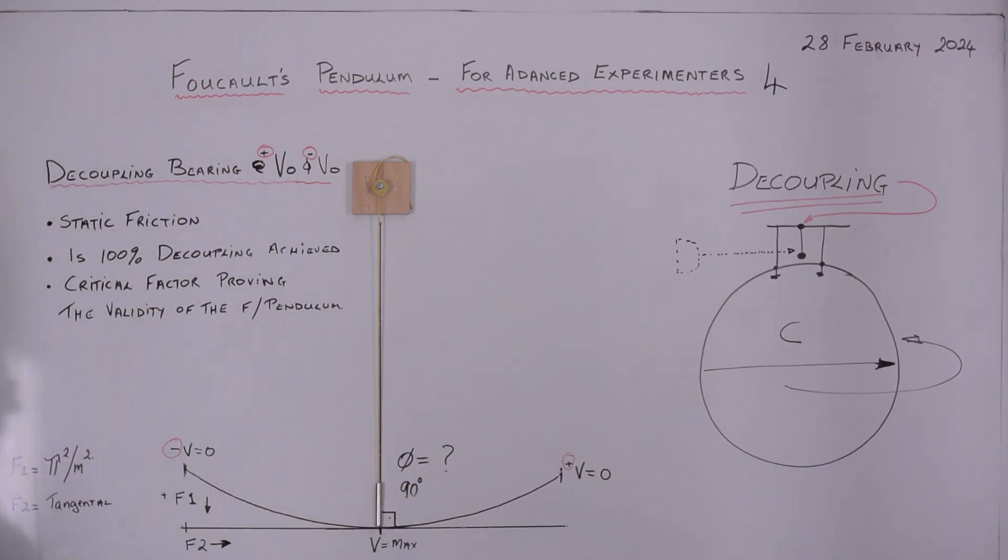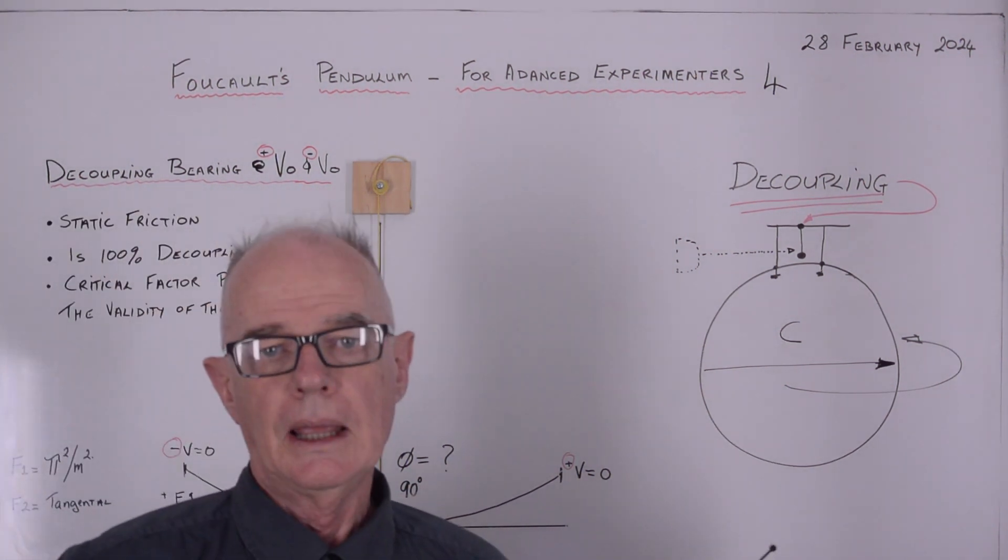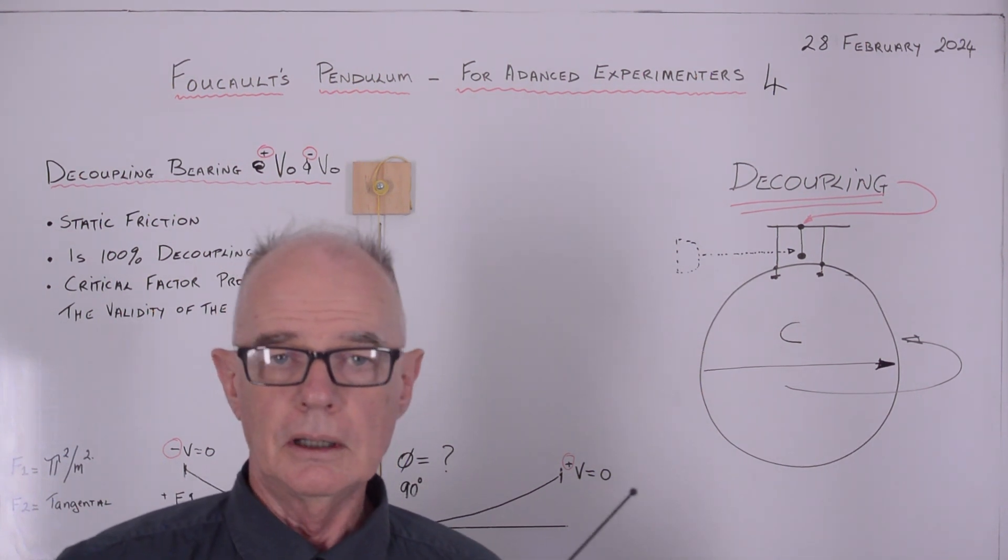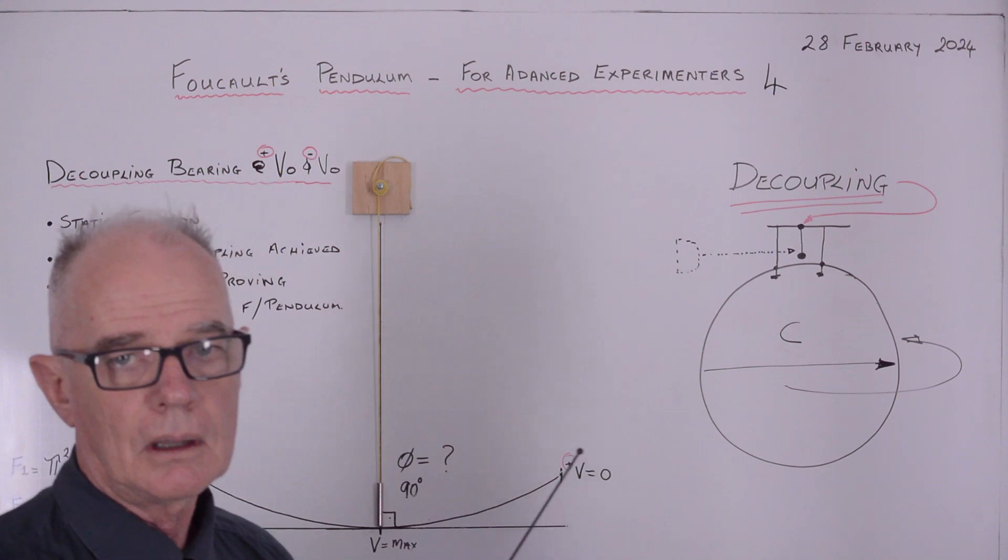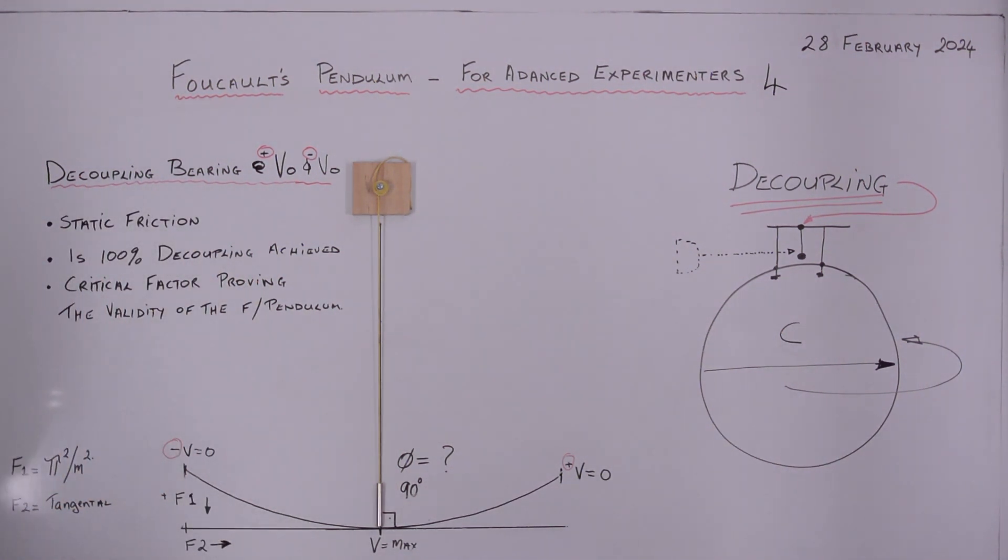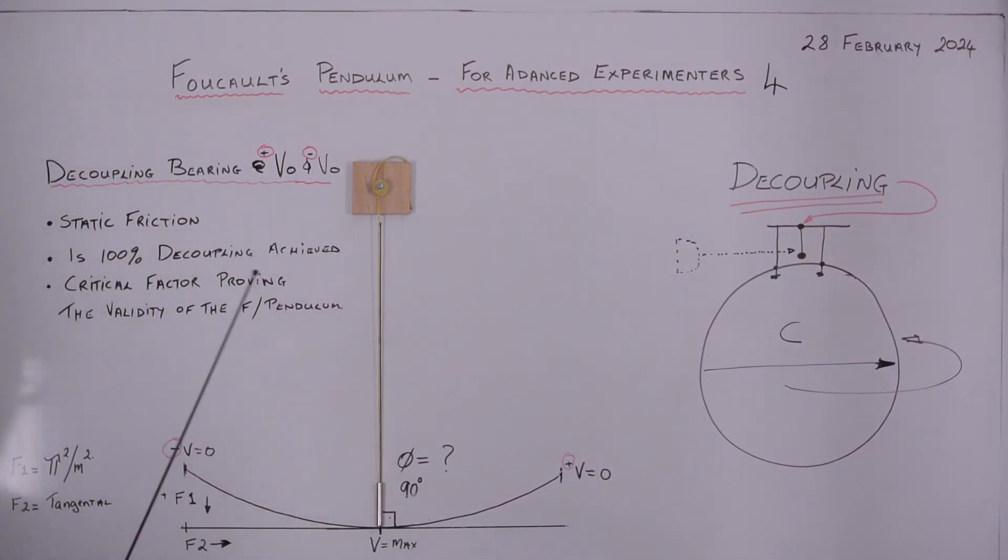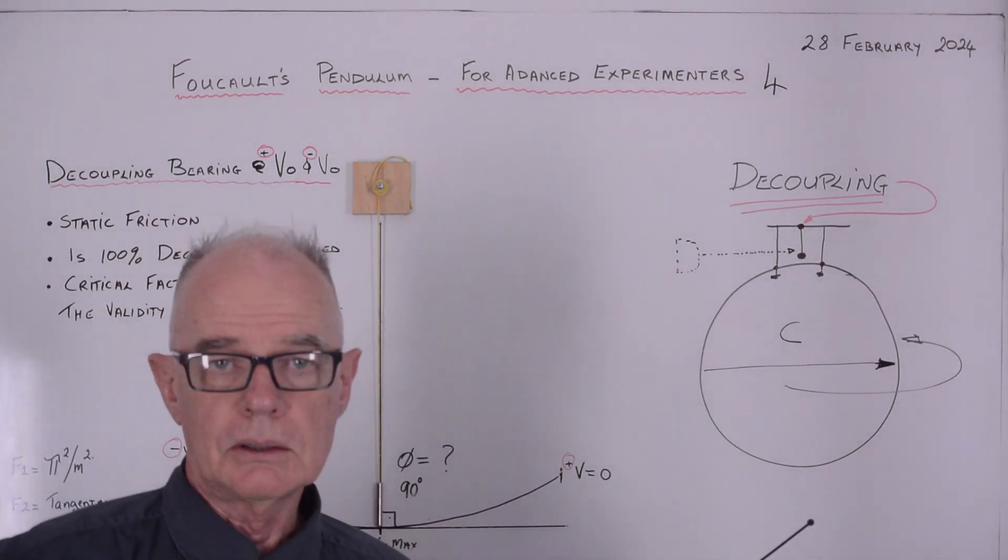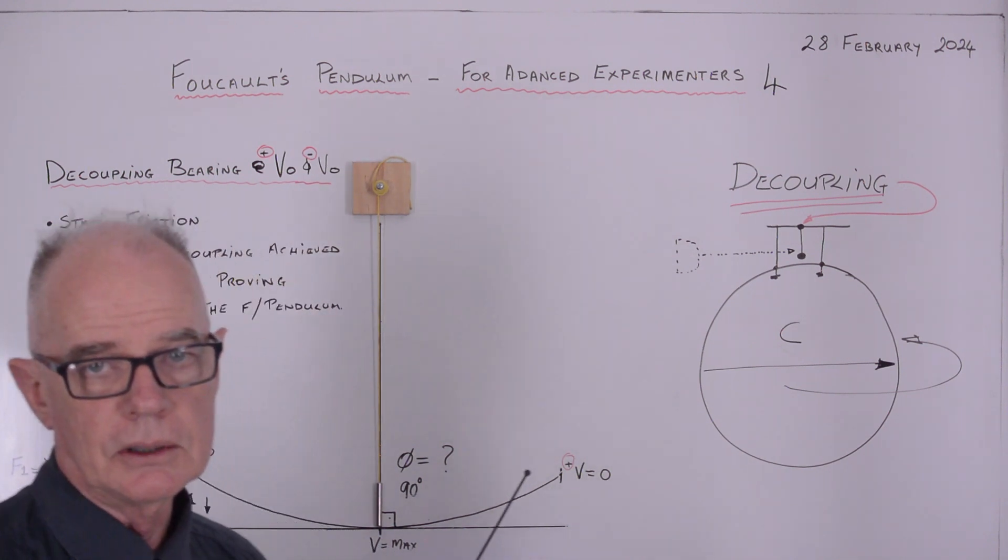Now as we explained in video number 3, when the pendulum stops and has no more linear inertia, then it's prone to being grabbed by the earth forces in the holding string or wire. And it's this static friction we have to examine very carefully. We have to go into it very deep.